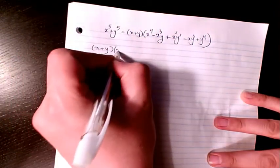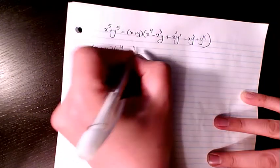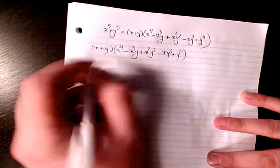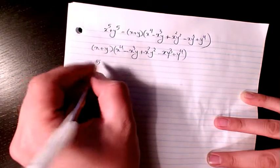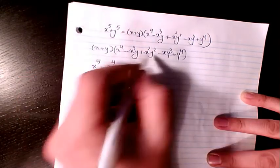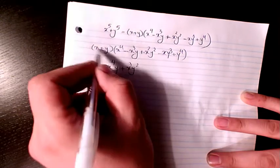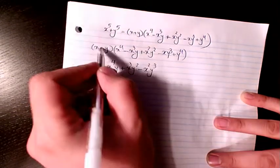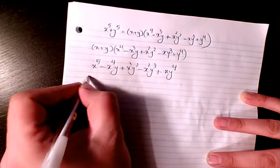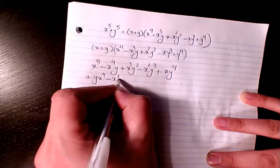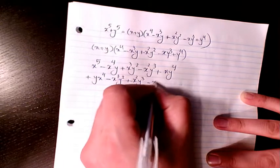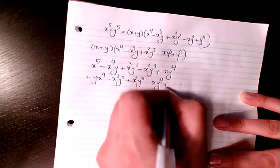So I have x times x to the power of 4, which gives x to the power of 5. Then negative x to the power of 4 y, then x cubed y squared, then negative x squared y cubed, then x times y to the power of 4. Then y times x to the power of 4, minus x to the power of 3 y squared, plus x squared y cubed, minus x y to the power of 4, plus y to the power of 5.